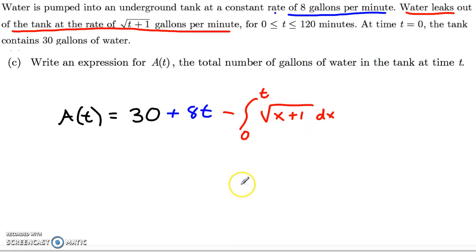And that's all you need to do for this problem. Notice it just says write an expression for A of t, the total number of gallons in a tank. Well, there you go. That's your expression for A of t. What you started with, plus what you gain, minus what you lose, which is the hardest part because you have to integrate this function from 0 to whatever time value we're interested in.